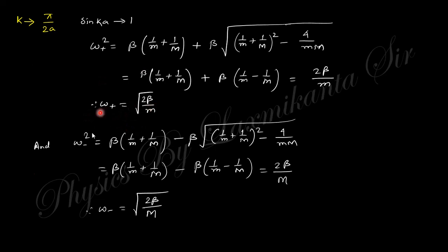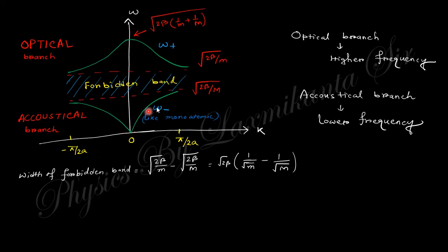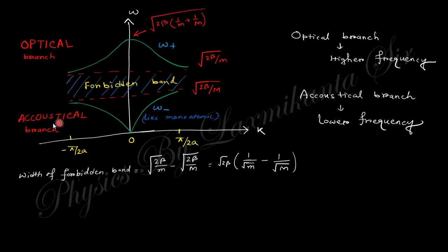In the graphical representation, ω₋ starts at 0 and is linear near k = 0, similar to the monoatomic result. ω₊ has a finite value at k = 0 and a different value at k = π/a. There is a gap between the two branches — this is known as the forbidden gap. The upper branch is the optical branch and the lower branch is the acoustic branch.